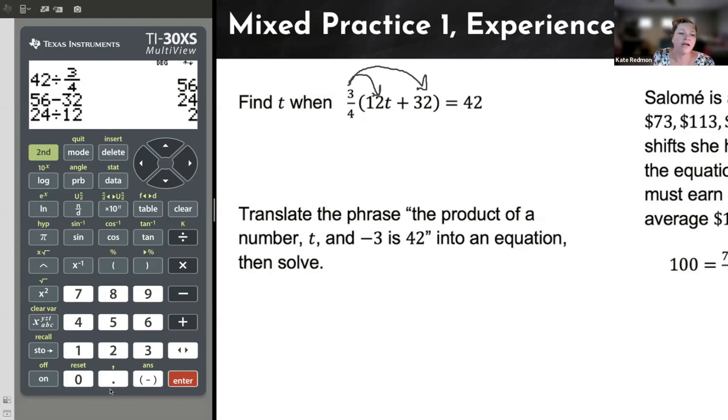And so what I'll end up doing is taking the 3/4 and let me arrow out, multiplying it by the 12t. So 3/4 times 12 is 9. But it wasn't just 12, it was 12t. So I'll have 9t. And that's going to be adding with 3/4 of 32. So let's do that. 3/4 arrow out of the fraction times 32. And I get 24. And of course, that equals 42.